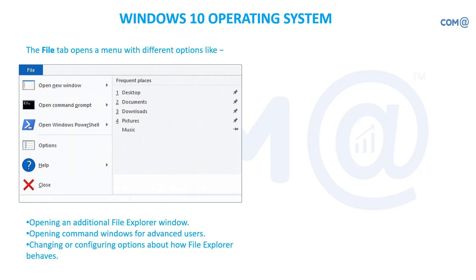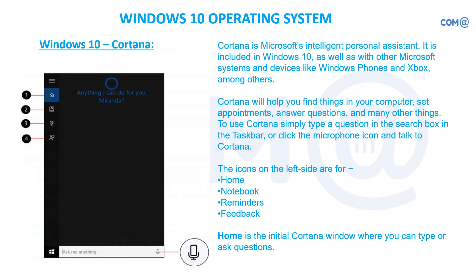The File tab in File Explorer provides options to open a Command Prompt or PowerShell. Cortana is a new feature discussed earlier — by default it is not enabled. If you require it, you have to enable it. Options include Home, Notebook, Reminders, and feedback. You can enable it via audio so that when you say something, it reacts accordingly.